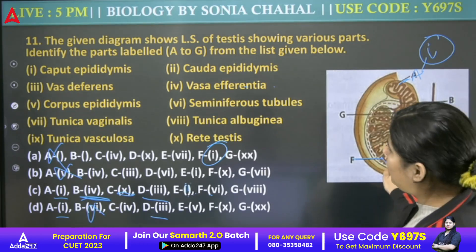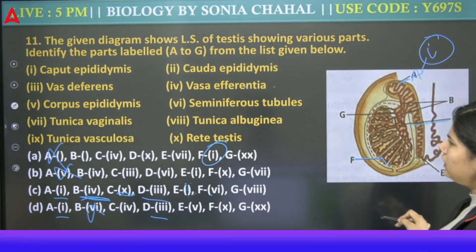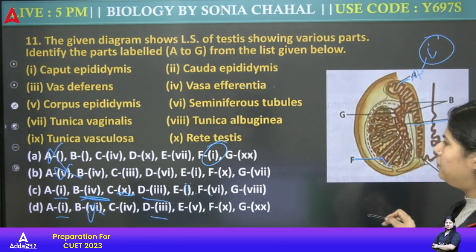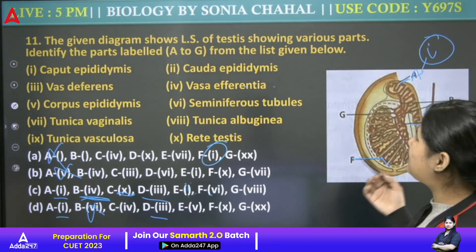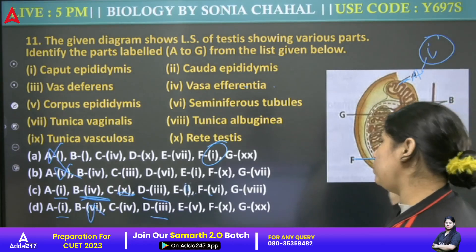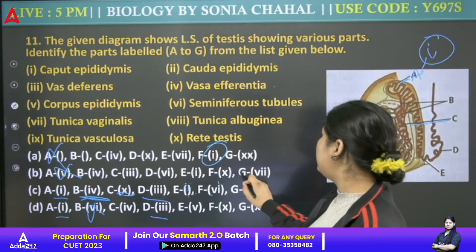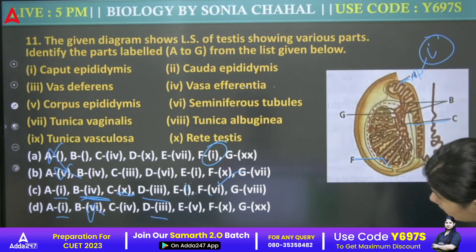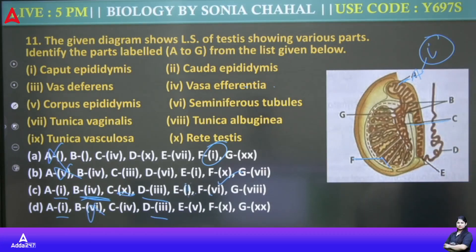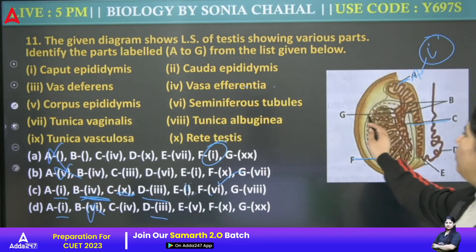4th — what is 4th for us? F is 6th. G is 8th — Tunica albuginea, that is correct, the outer membrane. So our answer here will be the C option.